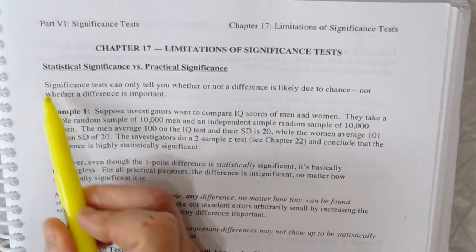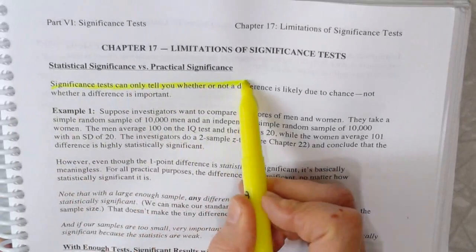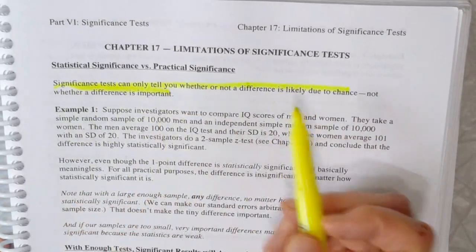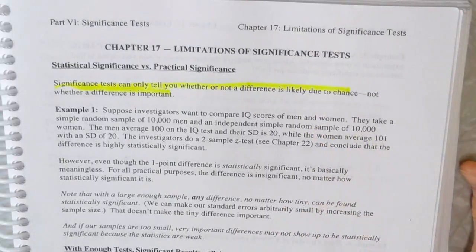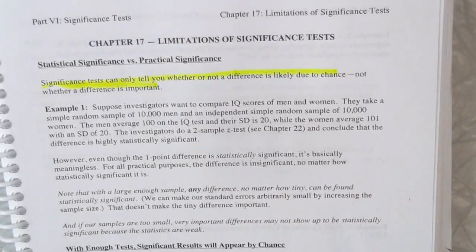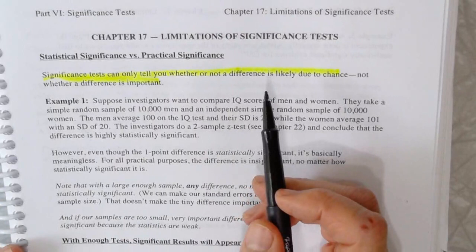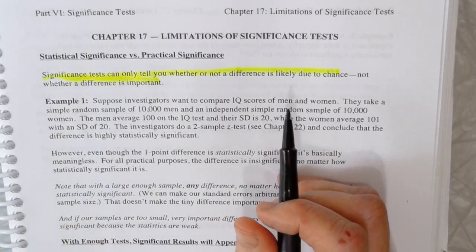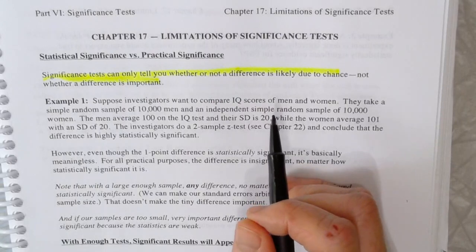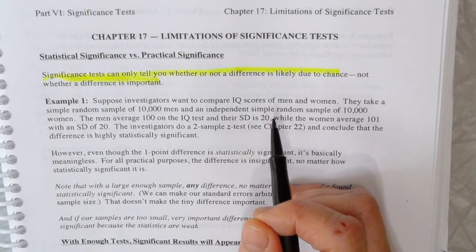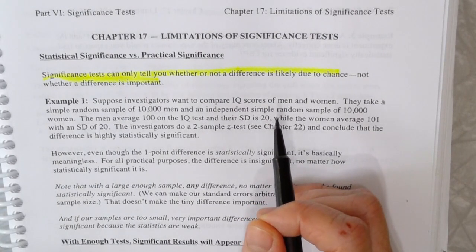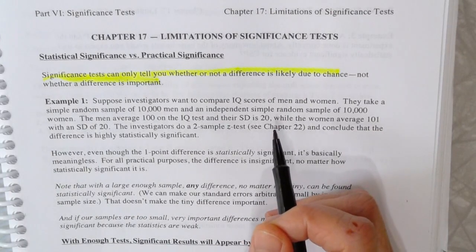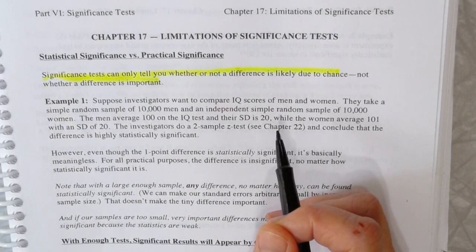Significance tests can only tell you whether or not a difference that you see is likely to be due to chance, not whether that difference is something that's important or not. So remember that if we had data on the whole population, if we saw a difference and we had the entire population, no matter how tiny that difference was, we'd say it's significant, statistically significant. That doesn't mean that you care about it.